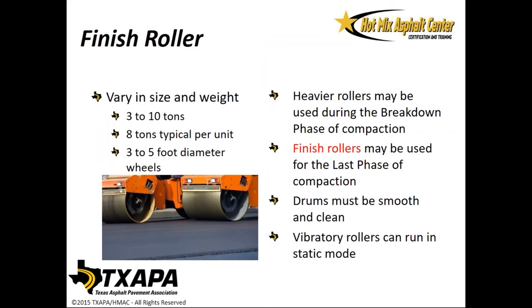Finish rollers vary in size and weight — usually 3 to 10 tons, about 8 tons typical. They have 3 to 5 foot diameter wheels. Heavier rollers may be used during the breakdown phase; the finish roller is used for the last phase of compaction. Drums must be smooth and clean — make sure the scraper plates will wipe off anything that gets on those steel wheels so we don't tear up the asphalt. Vibratory rollers can run in static mode, so we can use them for a variety of applications.